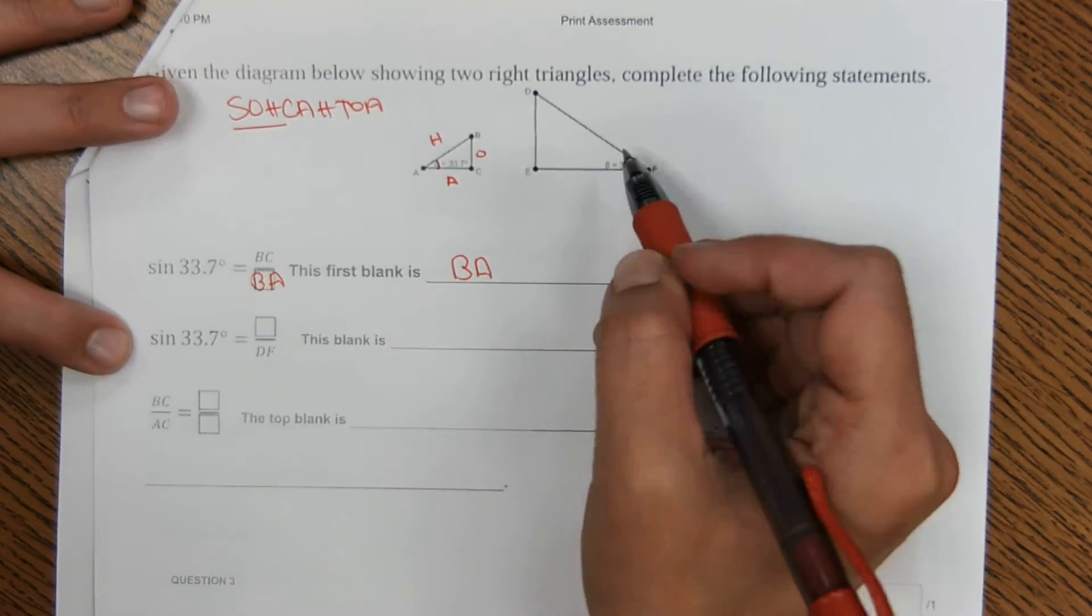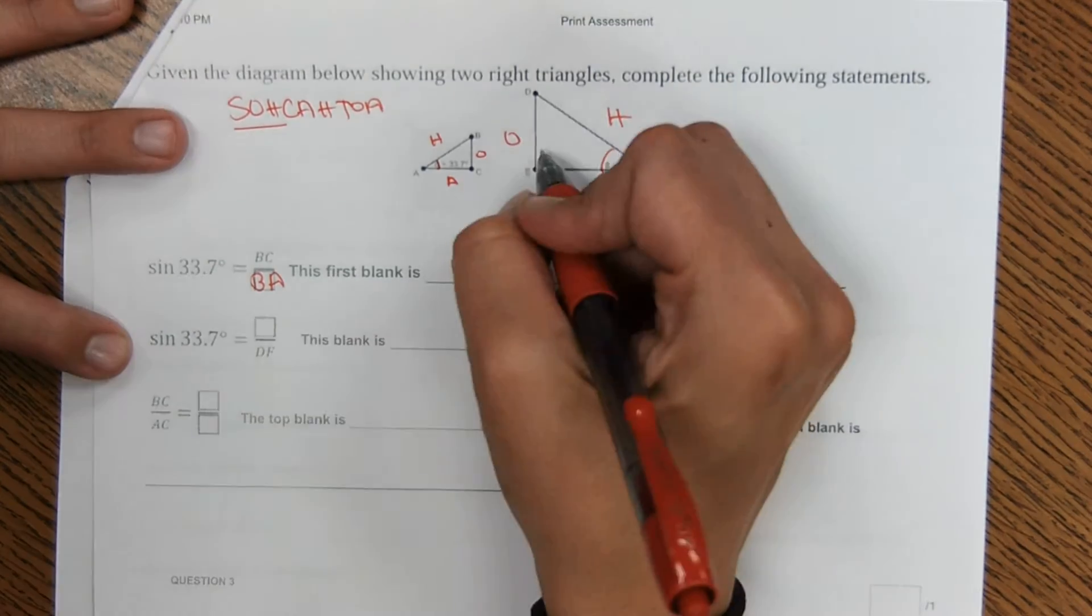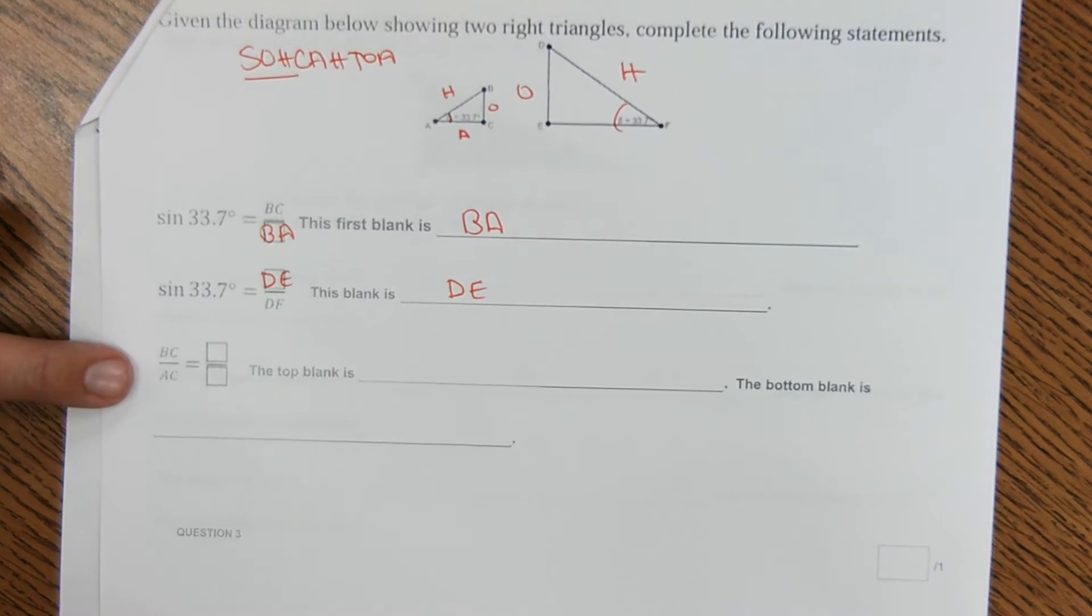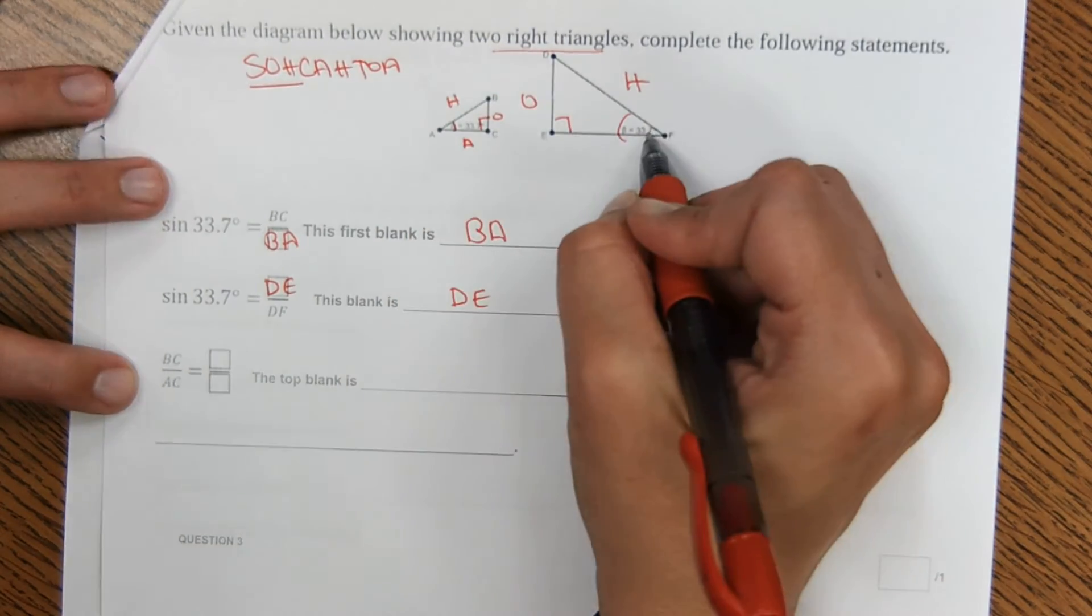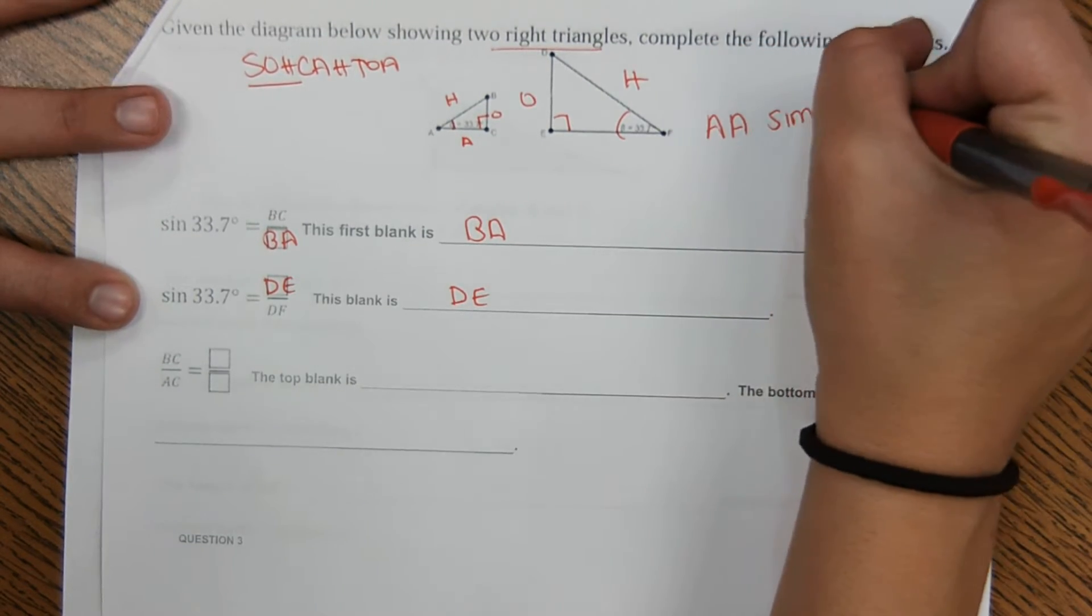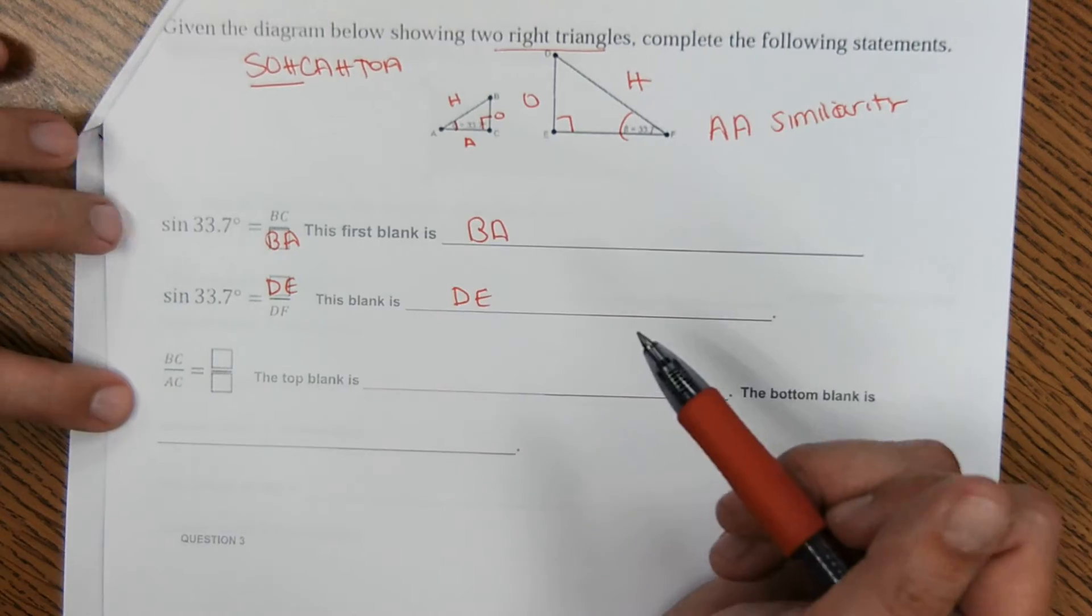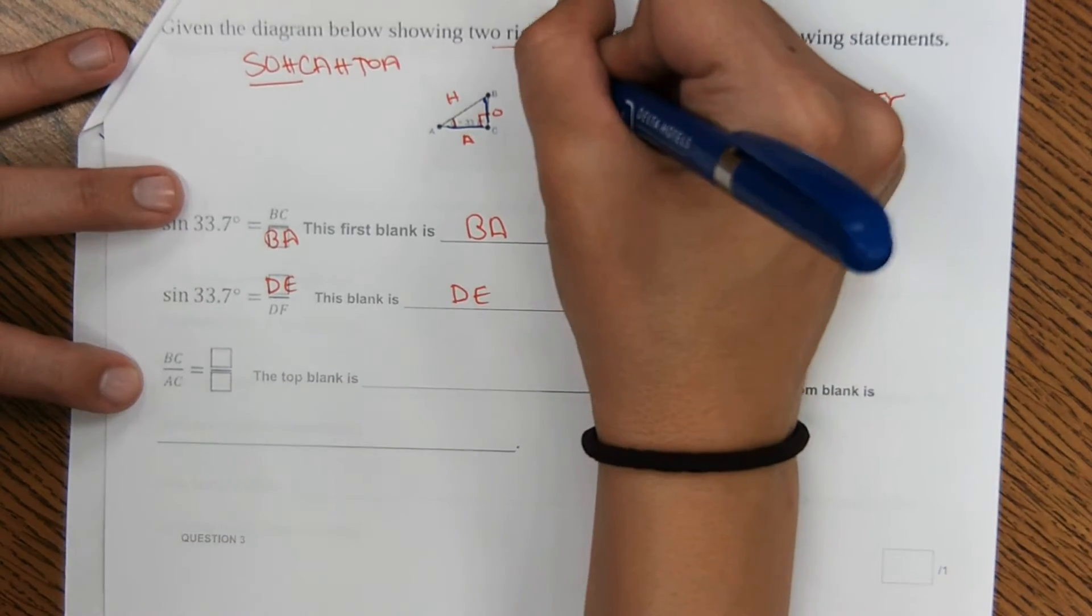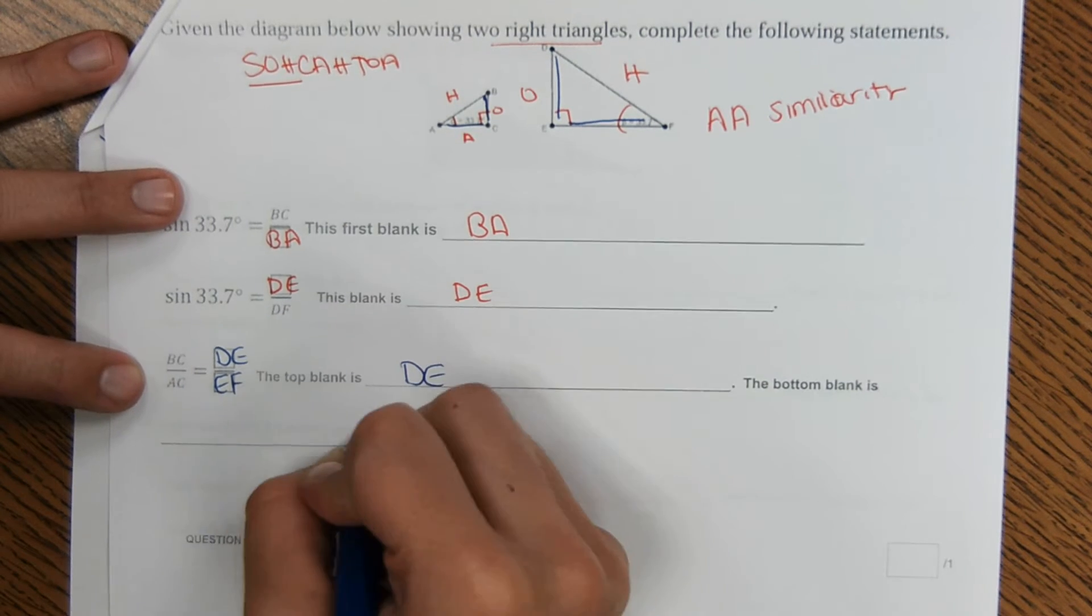And then for this one, opposite and hypotenuse, hypotenuse is DF, opposite would be DE or ED. And then here, because it says that these are right triangles, so 90 degree angle here, we know that the second angle is the same. So because of angle-angle similarity, we know that they are similar. We know that they are similar, so therefore their parts are proportional. So BC over AC should be proportional to DE over EF. And that's what they're looking for here, DE over EF.